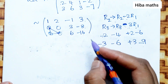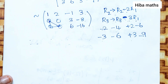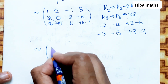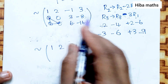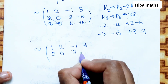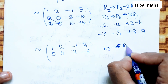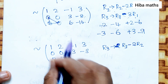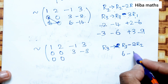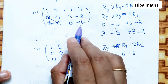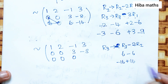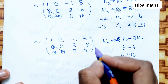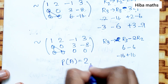After the first round of row operations, the second row is [0, 0, 3, -8] and third row is [0, 0, 6, -16]. Now R3 changes to R3 minus 2 times R2: 0 minus 0 = 0, 0 minus 0 = 0, 6 minus 2×3 = 0, -16 minus 2×(-8) = -16+16 = 0. The echelon form has 2 non-zero rows, therefore rank of A is 2.